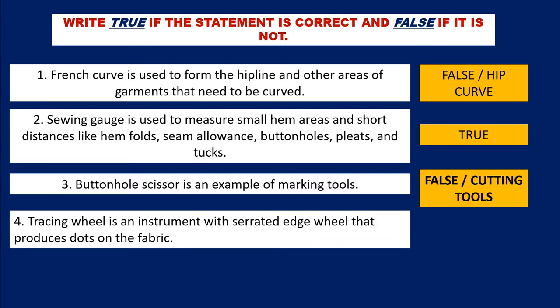Question number 4: Tracing wheel is an instrument with a serrated edge wheel that produces dots on the fabric. The answer is true.